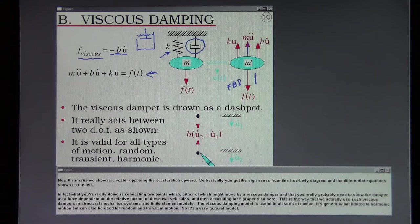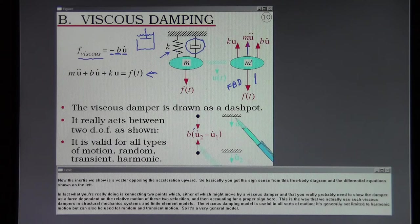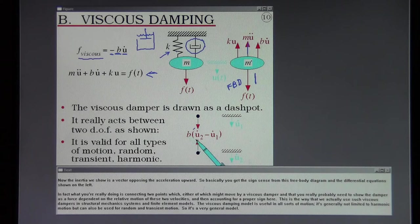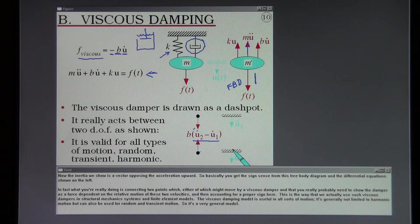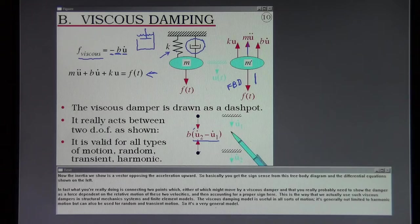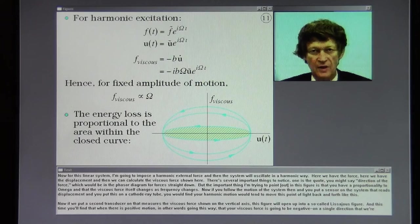So basically you get the sign sense from this free body diagram and the differential equation shown on the left. In fact, what you're really doing is connecting two points, either of which might move by a viscous damper. And that you really probably need to show the damper as a force dependent on the relative motion of these two velocities. And then accounting for a proper sign here.